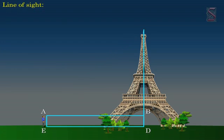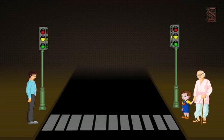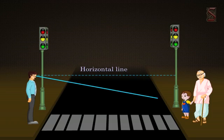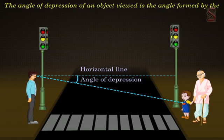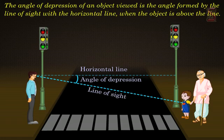If we are viewing an object, the line of sight is a straight line from our eye to the object. We treat the object as a point since the distance involved is quite large. If an object is below the horizontal line from the eye, we have to lower our head to view the object. In this process, our eyes move through an angle, which is called the angle of depression. The angle of depression of an object viewed is the angle formed by the line of sight with the horizontal line.